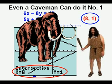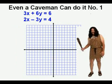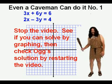Let's give Og one more system to solve: 3x + 6y = 6 and 2x - 3y = 4. Stop the video, see if you can solve by graphing, then check Og's solution by restarting the video.